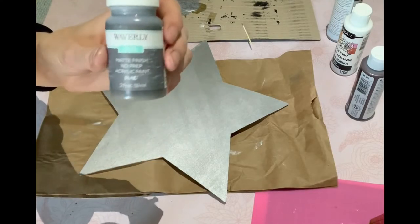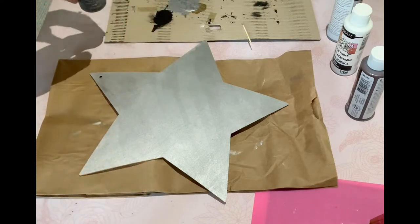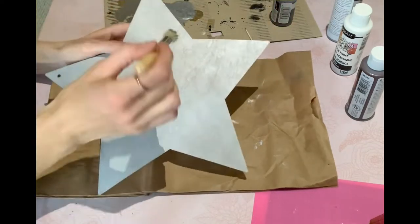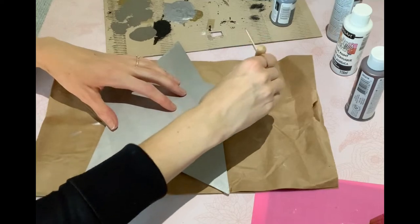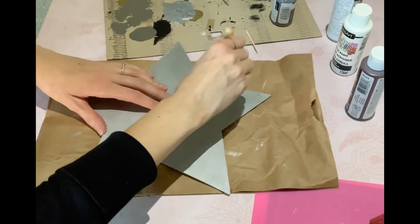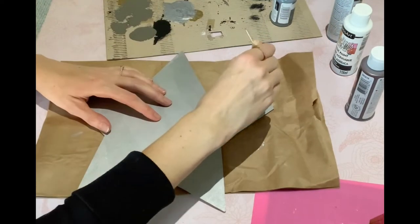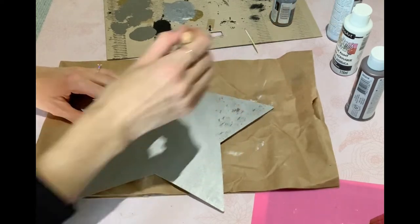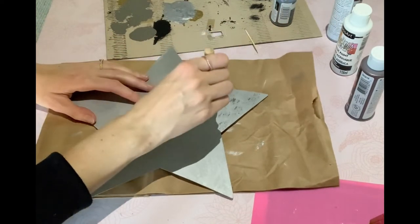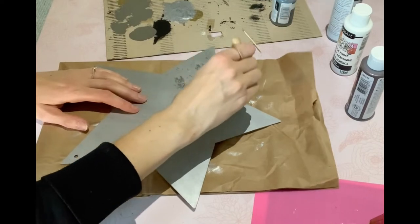Now I'm taking this Waverly chalk paint. I got this when the borders were open from Walmart in the United States, but you could use any solid gray paint here. I'm using my stencil brush and just dabbing it on to give it that stipple effect.